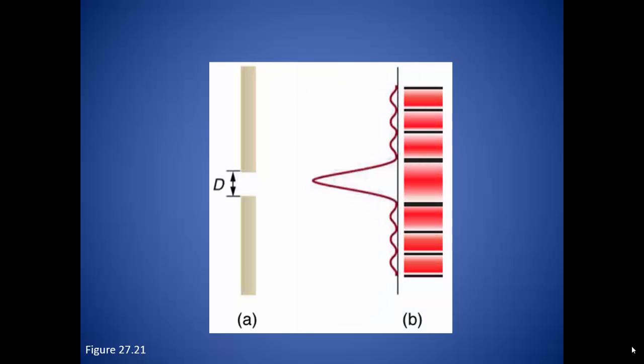What we get is a large central maximum bright fringe with much, much smaller fringes on either side. The bright fringes are a result of two waves constructively interfering, and the dark fringes are a result of the waves destructively interfering.